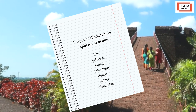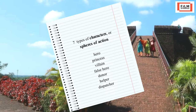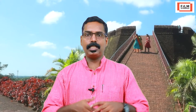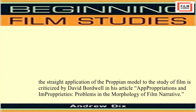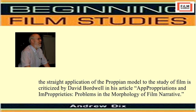The seven character types or spheres of action are: the hero, the princess, the villain, the false hero, the donor, the helper, and the dispatcher. Such formal functions and character types work at the syntagmatic level, not the paradigmatic level, according to structuralist critic Claude Lévi-Strauss. Andrew Dix mentions that the straight application of the Proppian model to film is criticized by David Bordwell in his article 'Appropriations and Improprieties: Problems in Morphology of Film Narrative.'